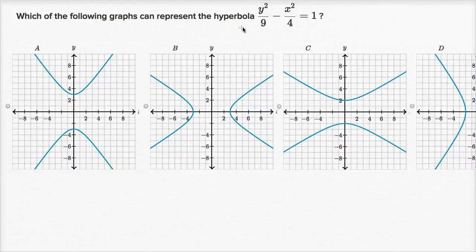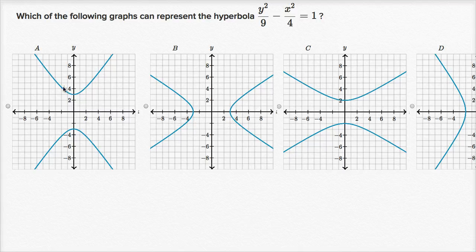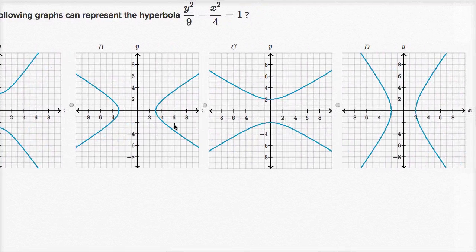Which of the following graphs can represent the hyperbola y squared over nine minus x squared over four equals one? We have four choices. Choices A and C open up to the top and the bottom — up and down. Choices B and D open to the left and the right.